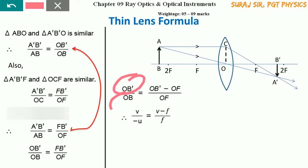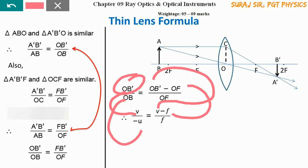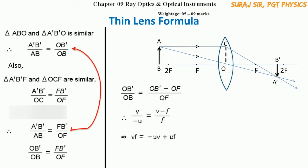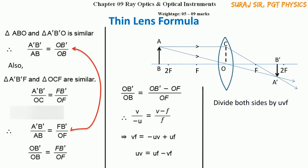In standard notation, OB' = v (image distance), OB = −u (object distance), and OF = f (focal length). Cross-multiplying gives vf = −uv + uf. Rearranging and dividing both sides by uvf, we arrive at the thin lens formula: 1/f = 1/v − 1/u.